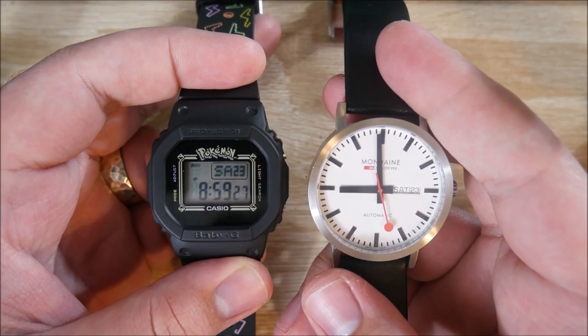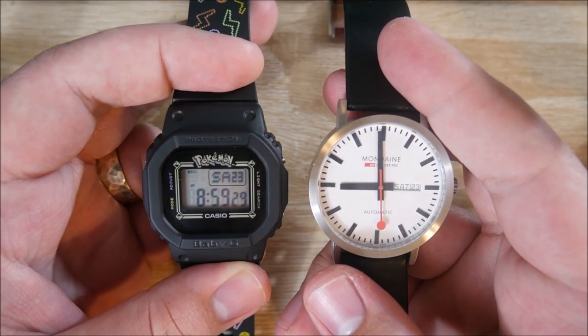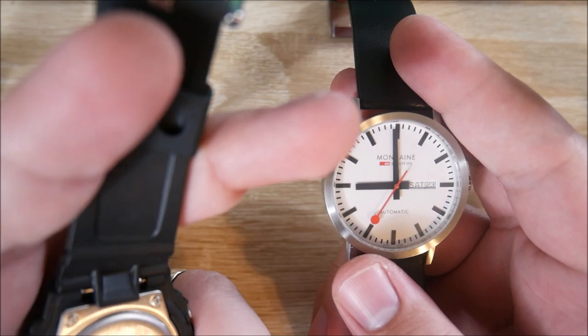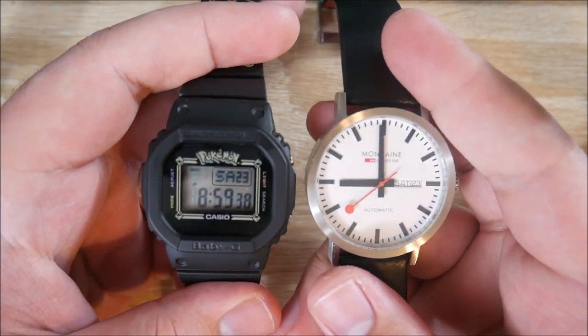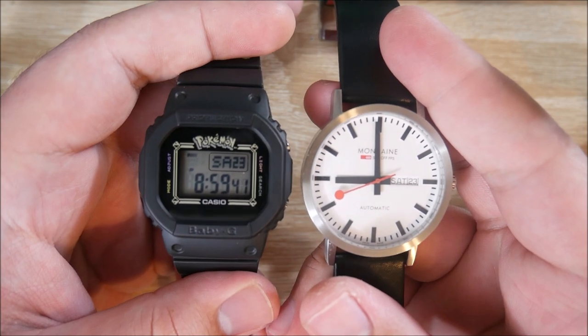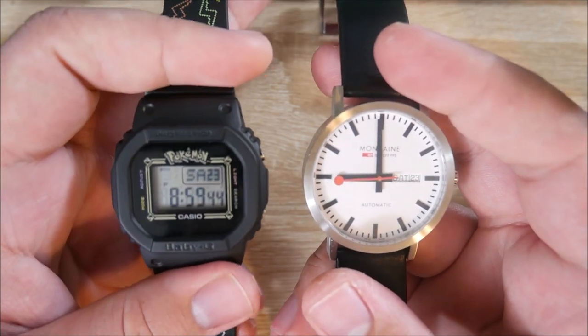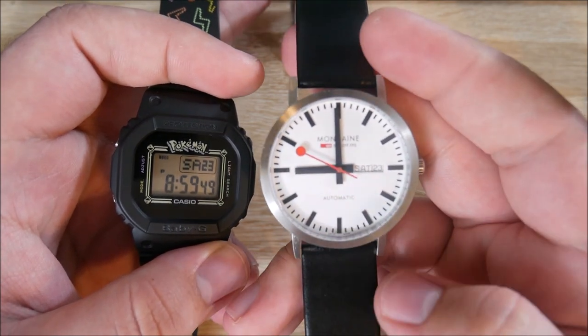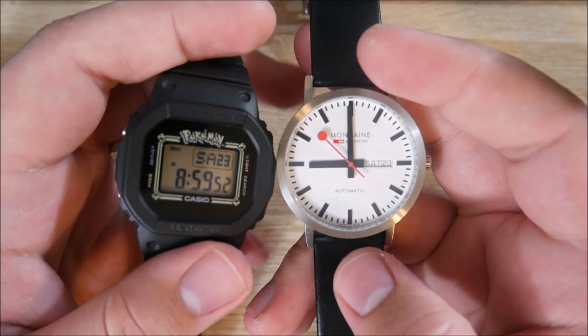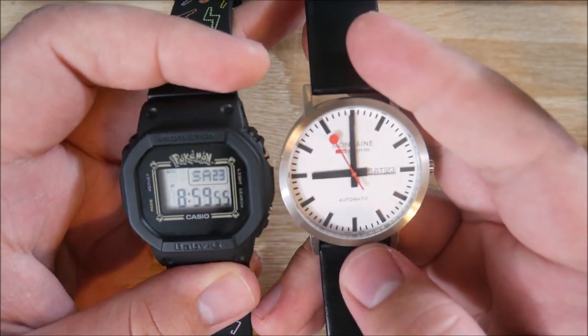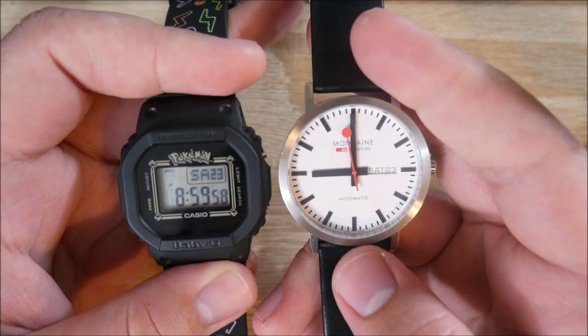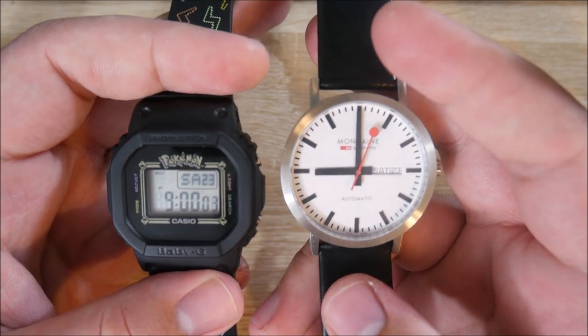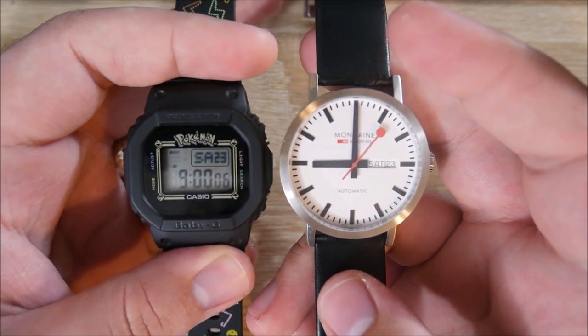So here it is next to a watch that's very close in size. This is a Casio Baby G, model BGD560PKC. Very similar overall size. The Mondaine has a 40mm case diameter, 47mm lug-to-lug, and 10.3mm thick. Very slim for an automatic watch and a very wearable size for a lot of people. For me, it's a good smaller dress watch, which is the reason I picked it up.